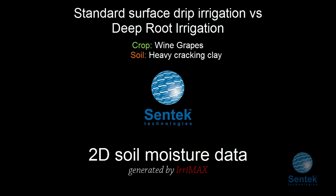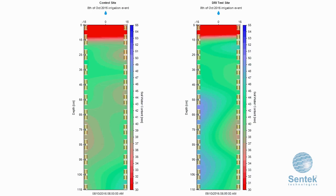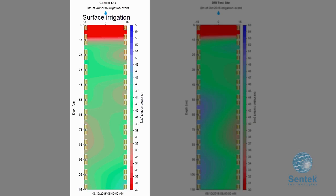The data you're about to see was recorded from four Syntec drill and drop probes at two separate sites. The first site was the control, which had an emitter dripping onto the soil surface.